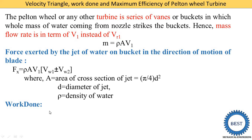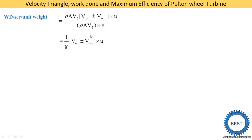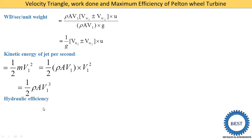Work done equals force times distance displaced, so Work Done equals FX times U, giving: rho*A*V1*(VW1 plus/minus VW2)*U. Work done per unit weight is obtained by dividing by weight equals rho*A*V1*g. Kinetic energy of the jet per second equals (1/2)*m*V1², where m equals rho*A*V1, giving KE equals (1/2)*rho*A*V1³.